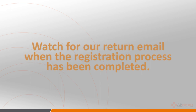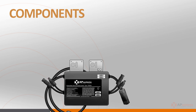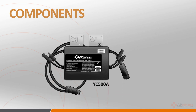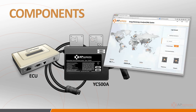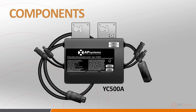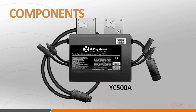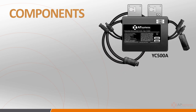Now, on to the training. There are three basic components that make up the AP Systems microinverter system: the inverter, in this case the YC500, the Energy Communication Unit or ECU, and the Energy Monitoring and Analysis Website or EMA. The inverter's role in the array is to convert the DC power generated by the solar panel into AC power, which can be utilized by the power grid. The YC500 is a grid-tied microinverter.